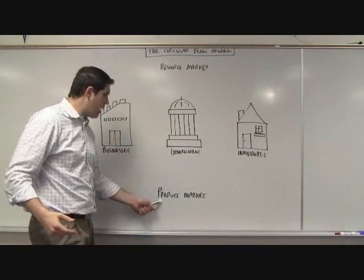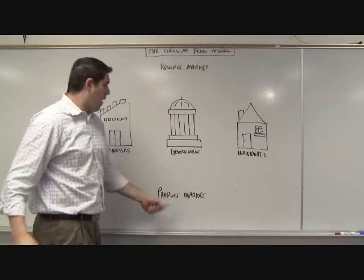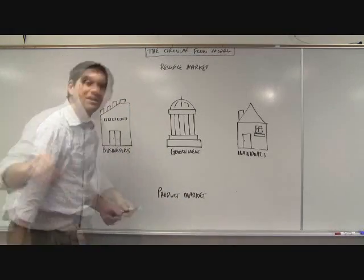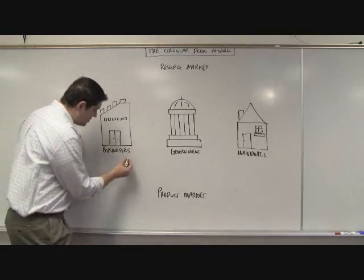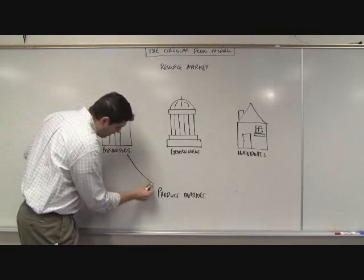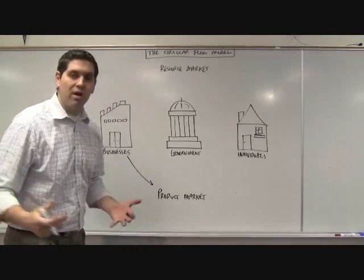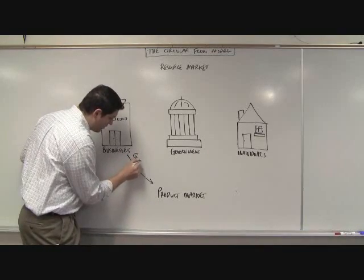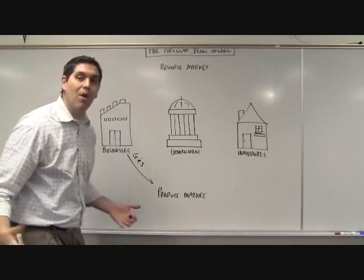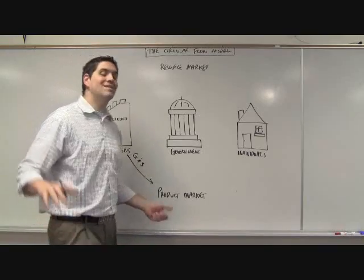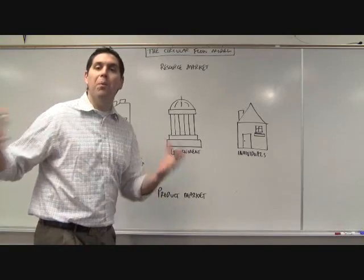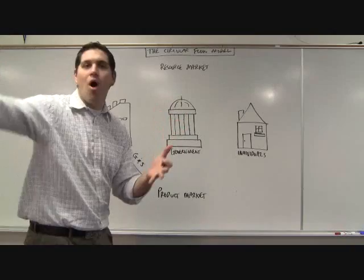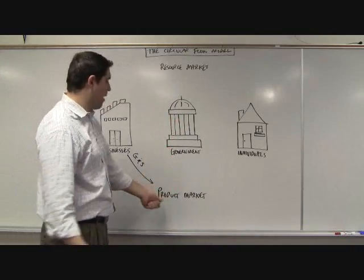There are two different things: the product market and the resource market. Let's start with the product market. What do businesses do? Businesses make stuff and sell it in the product market. This stuff is called goods and services. The product market isn't a place — it's all places where goods and services are sold: online auctions, eBay, the mall — all that stuff is the product market.